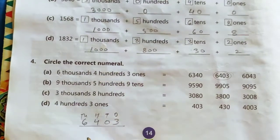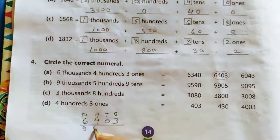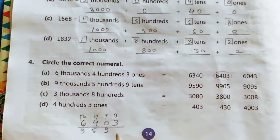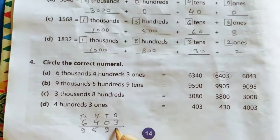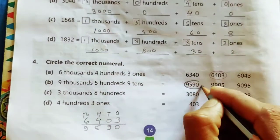Now the second one. 9,000, 9, 500, 5, and 9 tens. In the ones place nothing is written. So we will write 0 here. 9, 5, 9, 0. So this is 9,590.